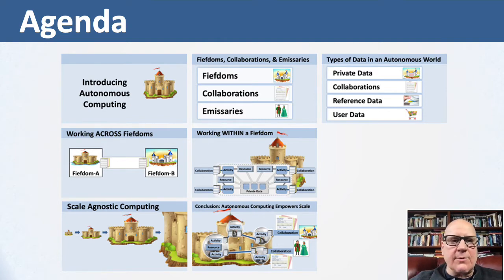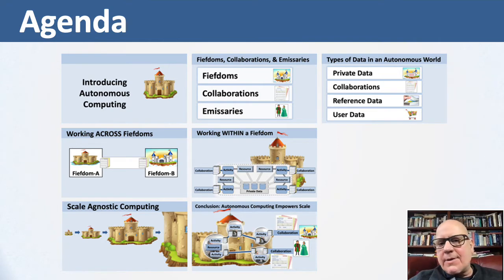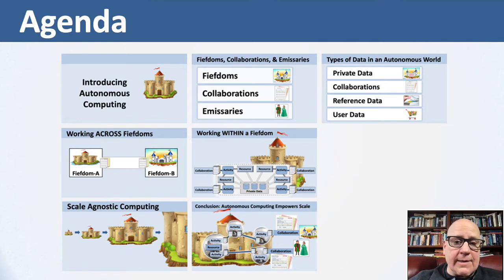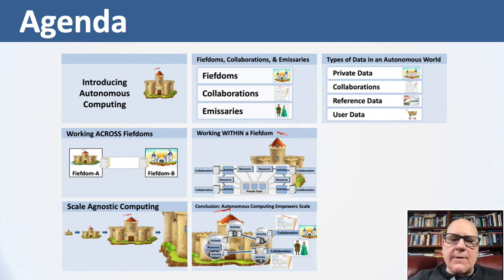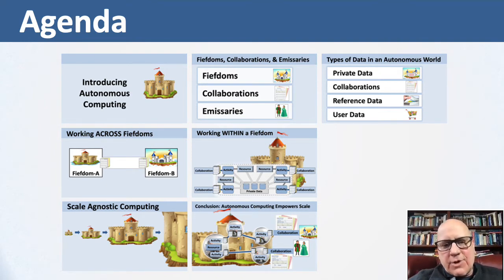Emissaries sit outside the autonomous boundary but help you fill out those messages that are in the collaboration. That takes us to the types of data in an autonomous world. There's private data contained inside of that fiefdom, inside the autonomous boundary. There are collaborations, which are the related messages that flow in and out to do some long-running business operation. There's reference data — data that comes from this autonomous fiefdom and is used on the outside by the emissary to help fill out the messages. Finally, there's user data such as a shopping cart, which would run within an emissary outside the autonomous boundary but is then used to help fill out those collaboration messages.